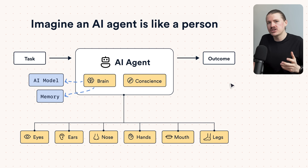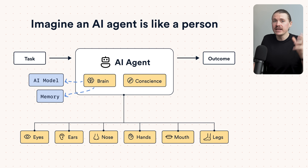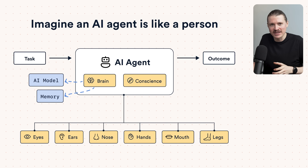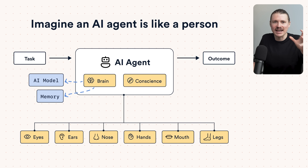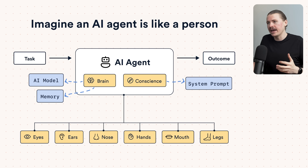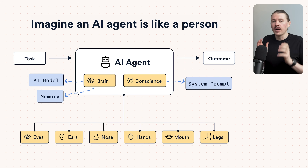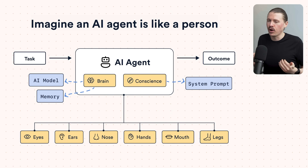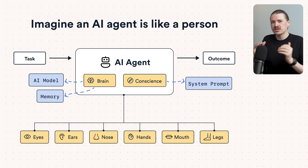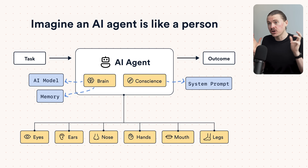While the brain gives our AI agent the ability to make decisions, what really guides those decisions — just like in people — is their conscience: how well are you going to do at the task, how motivated are you going to be, and what you think is actually a completed task. For AI agents, the way we guide this conscience is by creating a system prompt, often referred to as the AI agent's instructions — a very long list of instructions that tell it exactly how it should behave.